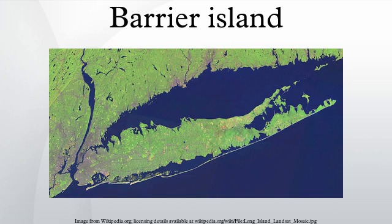Barrier islands are a coastal landform and a type of dune system that are exceptionally flat or lumpy areas of sand which form by wave and tidal action parallel to the mainland coast. They usually occur in chains, consisting of anything from a few islands to more than a dozen. They are subject to change during storms and other action, but absorb energy and protect the coastlines, as well as creating areas of protected waters where wetlands may flourish. A barrier chain may extend uninterrupted for over a hundred kilometers, excepting the tidal inlets that separate the islands, the longest and widest being Padre Island of Texas.